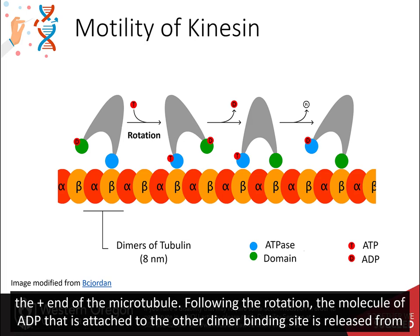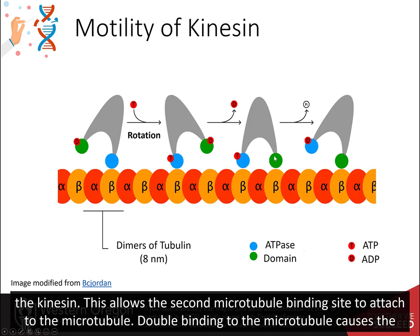Following the rotation, the molecule of ADP that's attached to the other part of the dimer is dissociated. The ADP attached to the other dimer binding site is released from the kinesin. This allows the second microtubule binding site to attach to the microtubule.